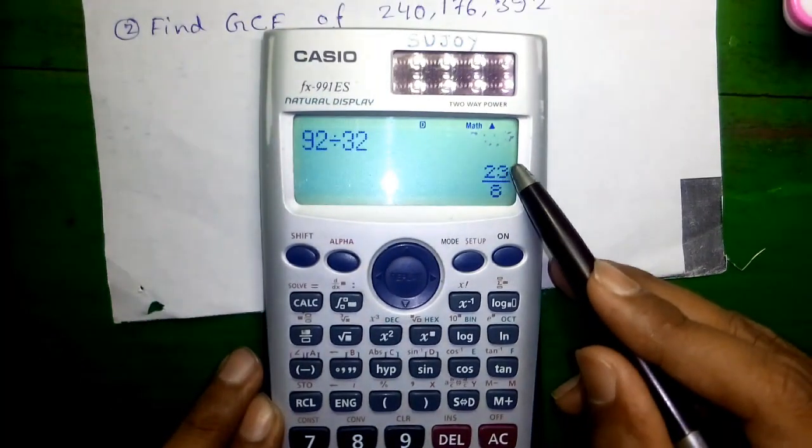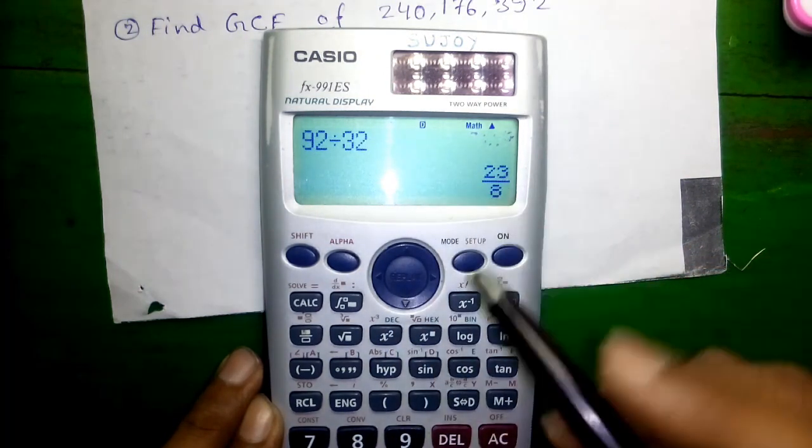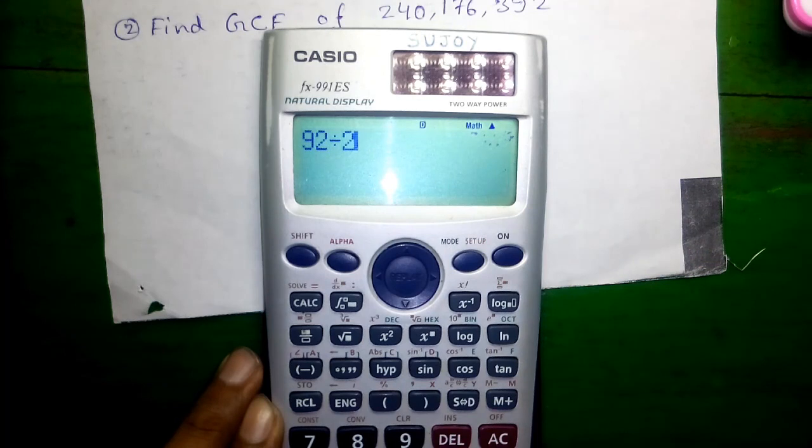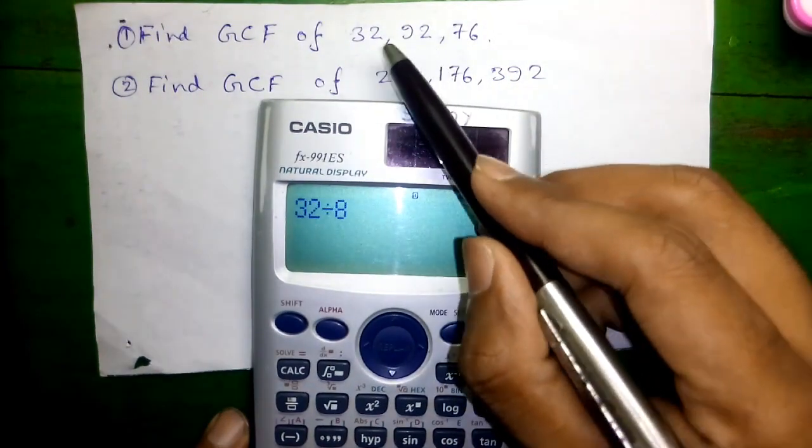We got 23 by 8. Now we'll divide 92 by 23 and 32 by 8 is 4, again 4. 4 is the common GCF of 92 and 32.